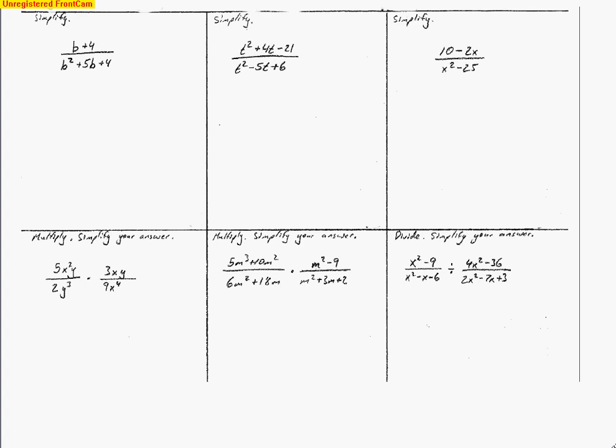This is the front side of the study guide for Test 1 of Quarter 4 for Algebra A. This test is on rational expressions. We're going to end up multiplying, dividing, adding, and subtracting these rational expressions along with simplifying.